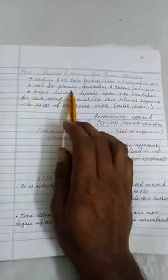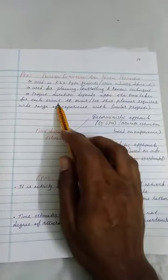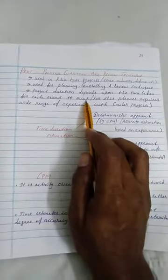It is used for planning, controlling, and review techniques also. Project duration depends upon the time taken for each event to occur. That's why this particular PERT problem is very important.